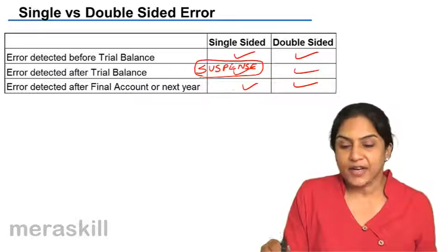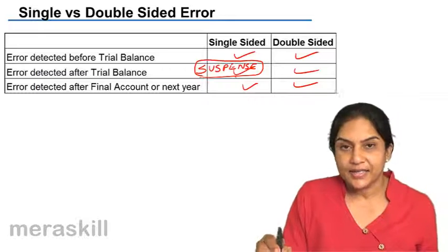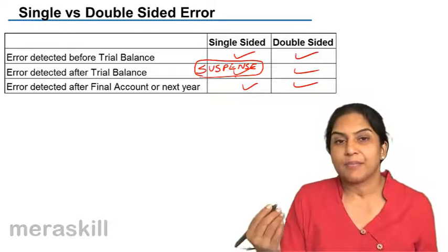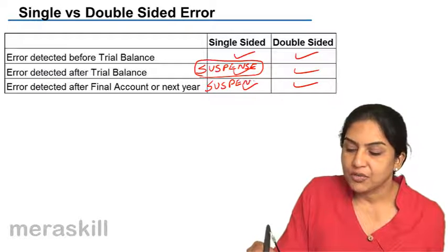When these errors are rectified, if there was a single-sided error, it is possible that the trial balance did not tally last year and we may still have a suspense account with us.